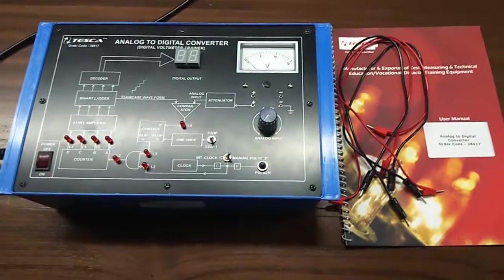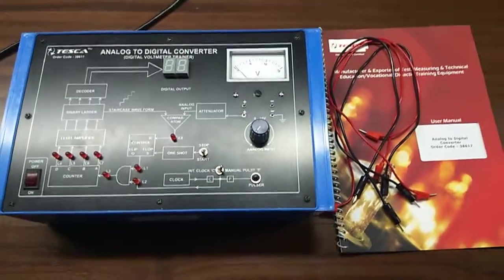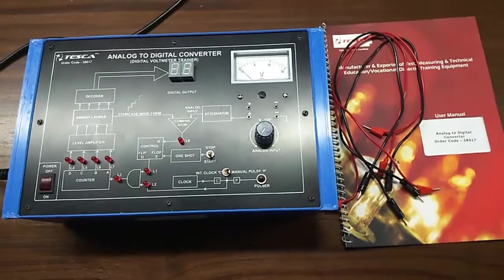Today, we are going to show you our Analog to Digital Converter Trainer K with order code 38617.